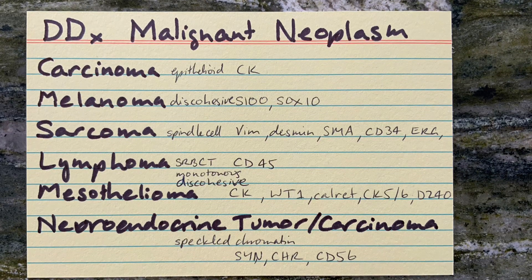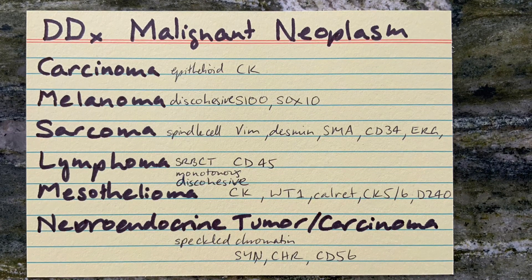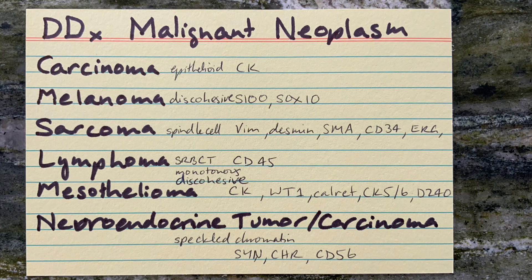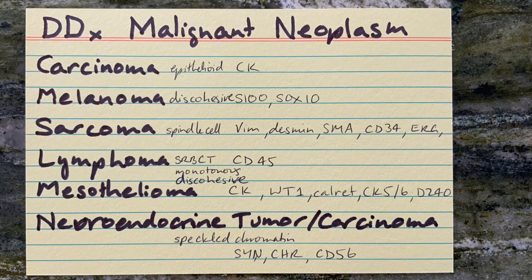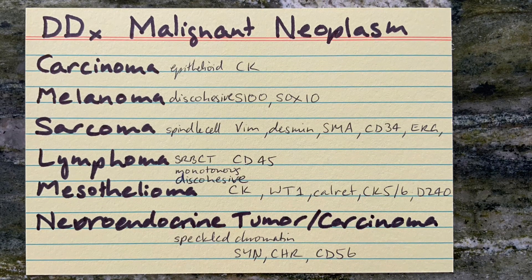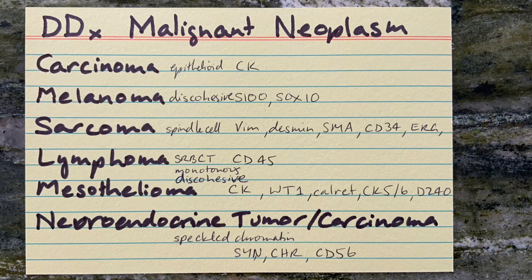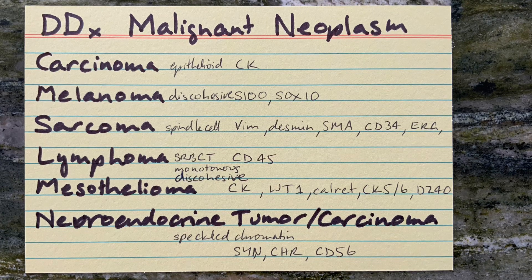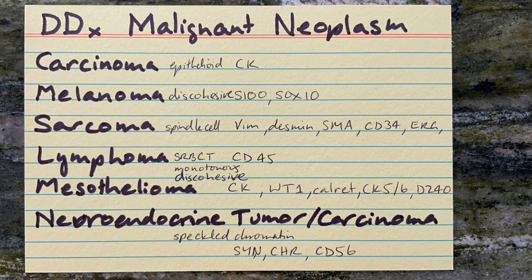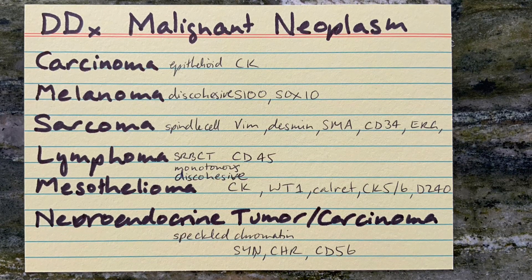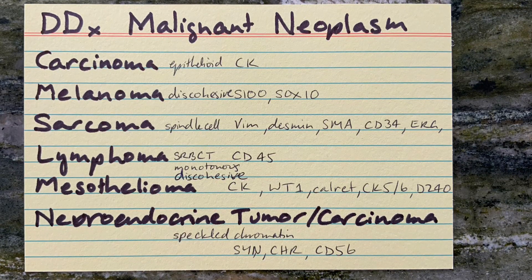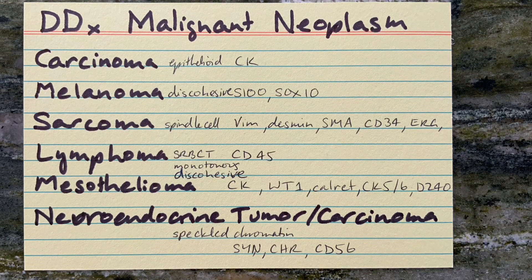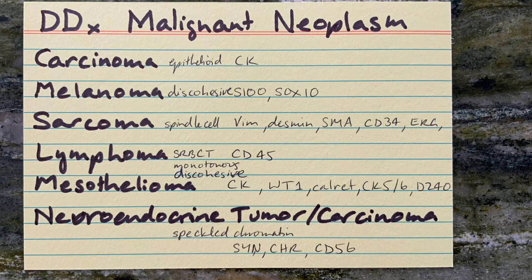Carcinomas have an epithelioid cell shape and stain positive with cytokeratins. Melanomas are usually epithelioid in shape but may be any shape, and they are discohesive. They stain positive with S100 and SOX10.